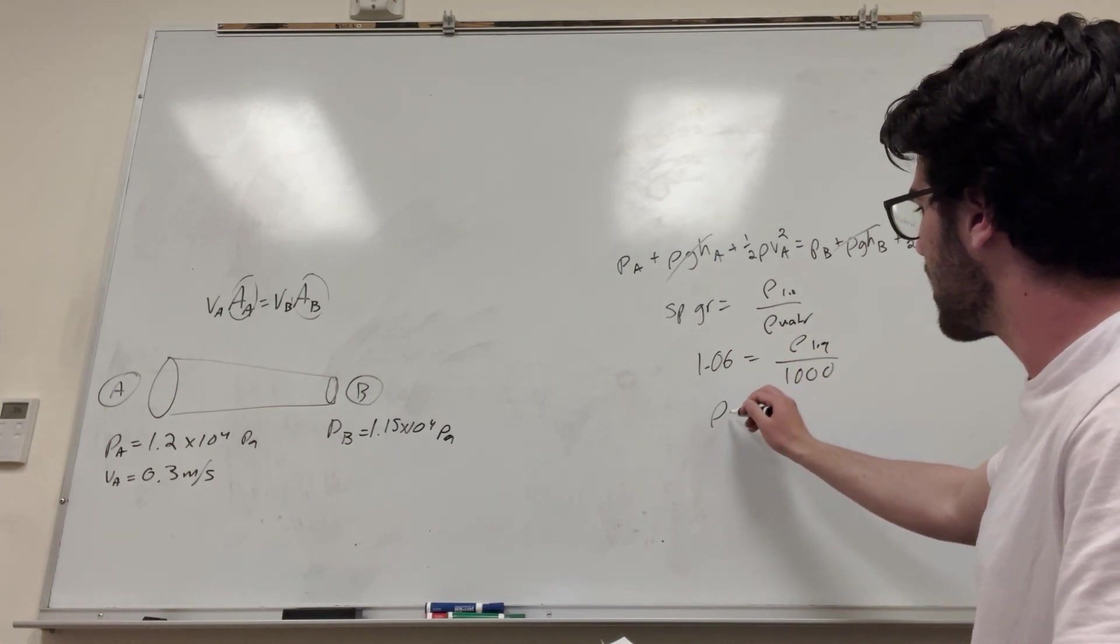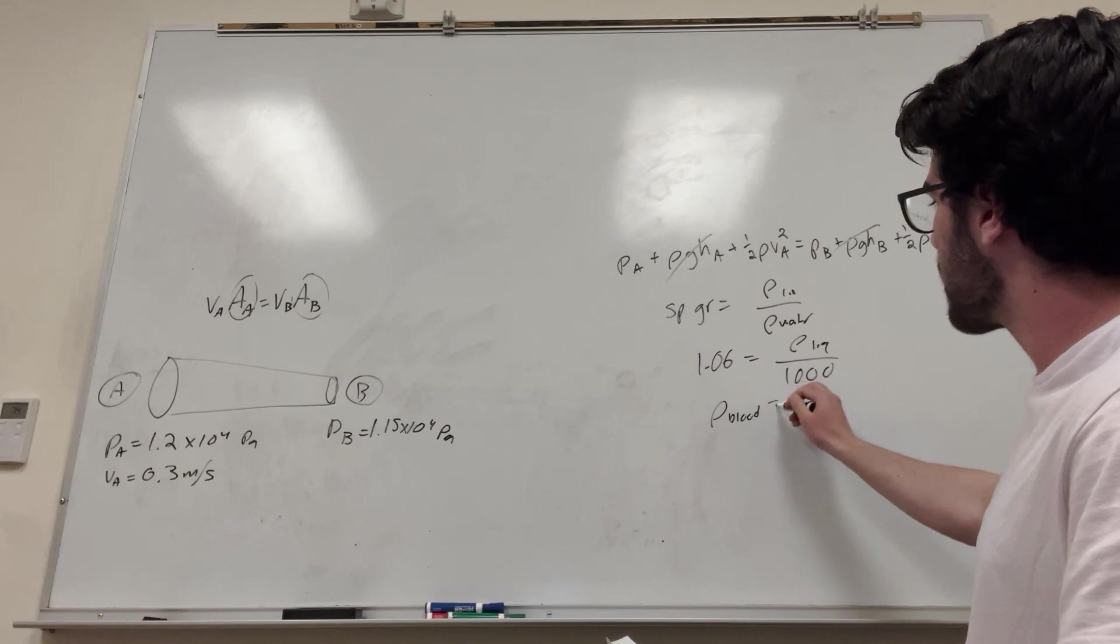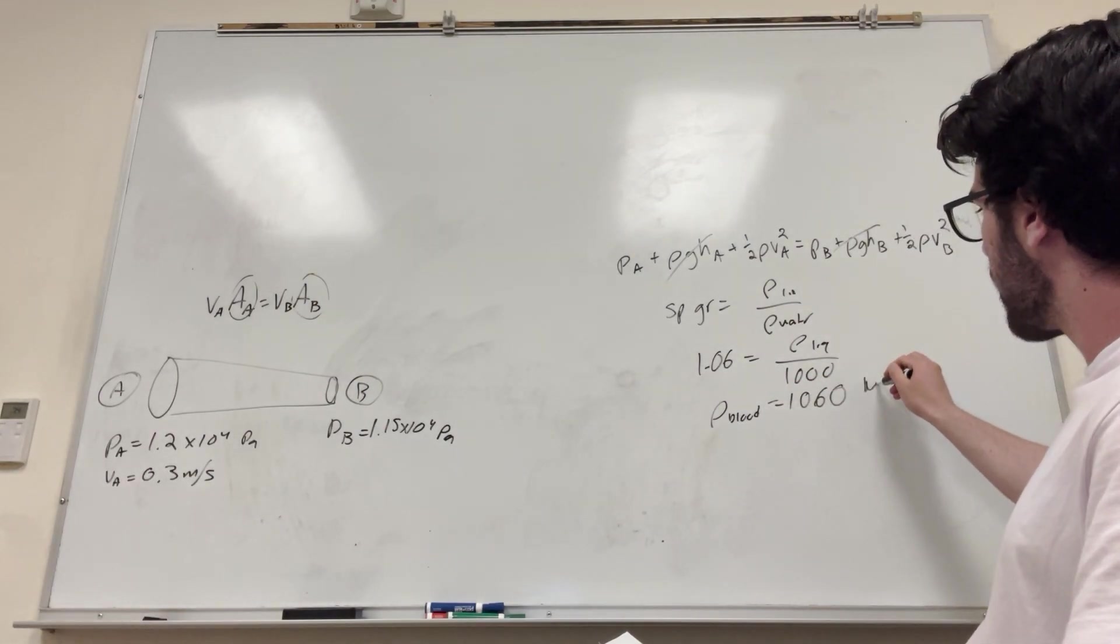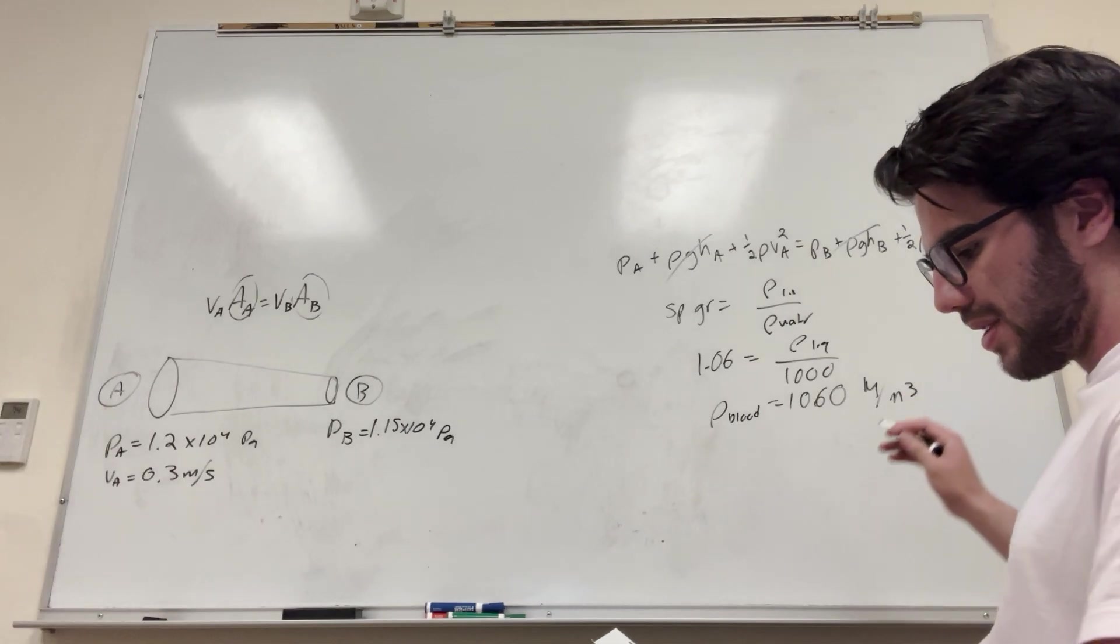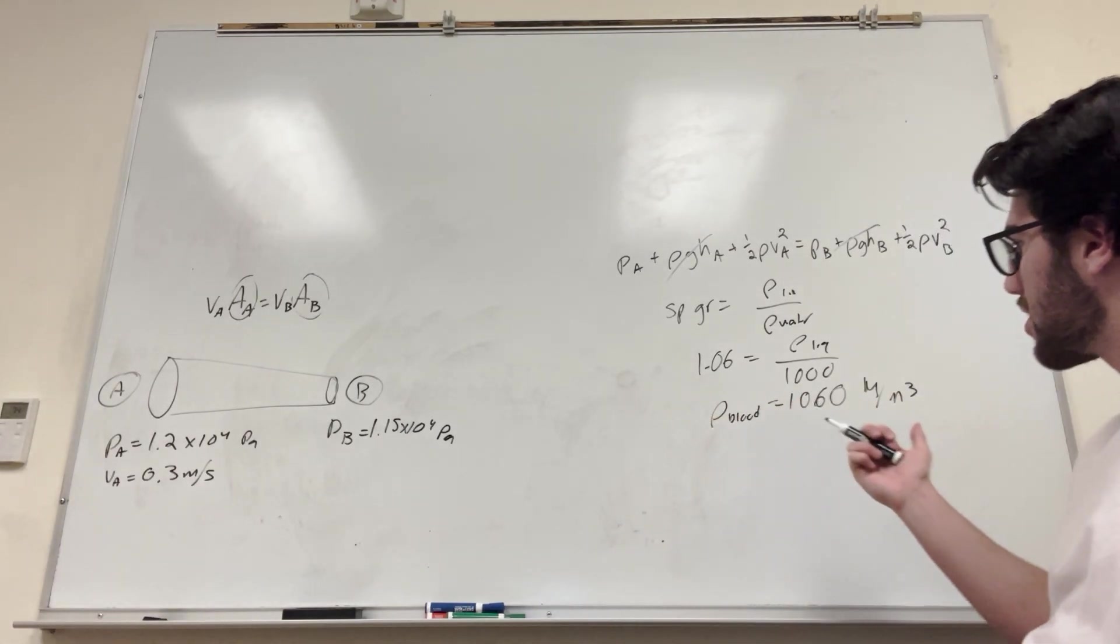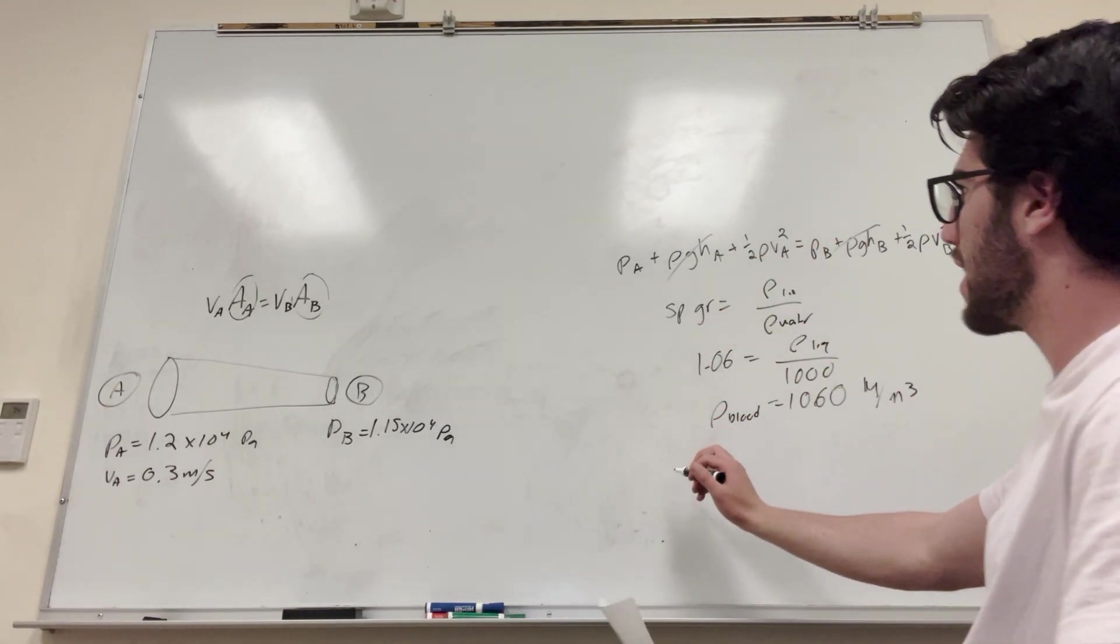And we're trying to find the density of our liquid, and then that's over the density of water, which is 1,000. So you multiply 1,000 by this, and you're going to get the density of the blood is equal to 1,060 kilograms per meter cubed. So there you go. That's one number we need. So basically, we can plug this into here. So let's do that.